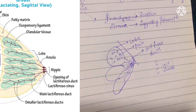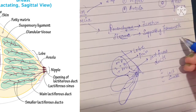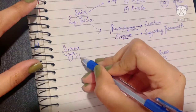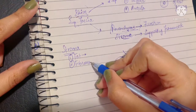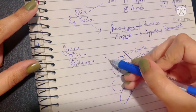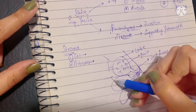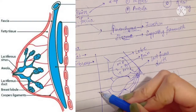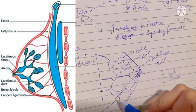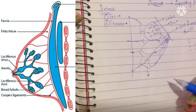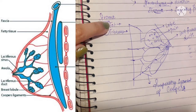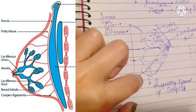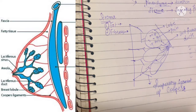The stroma of the breast consists of two types of tissue: fatty tissue and fibrous tissue. The fatty tissue is full of adipose cells. The fibrous part of the stroma forms septa — divisions that keep the breast bound to the deep fascia and anchor the skin of the breast to the deep fascia. These fibrous septa are called the suspensory ligaments of Cooper.